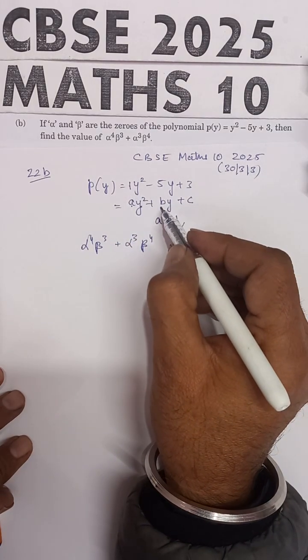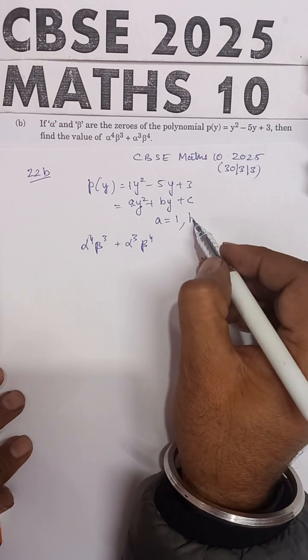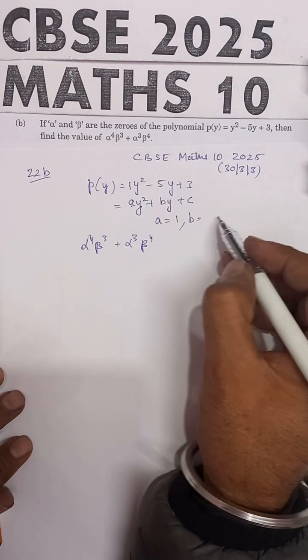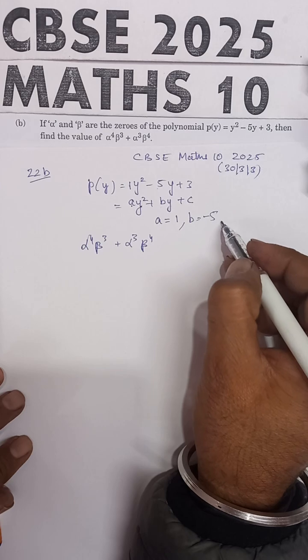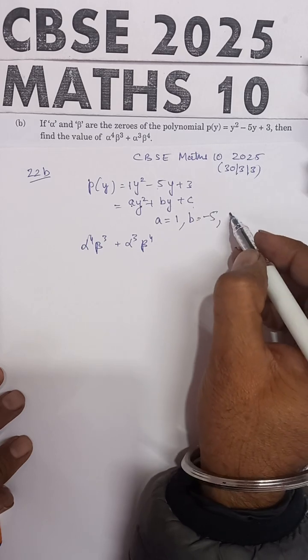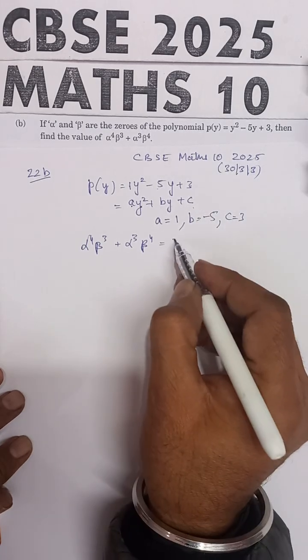The coefficient of Y is B, and the coefficient of Y here is -5, so B = -5. The constant term is 3, so C = 3.